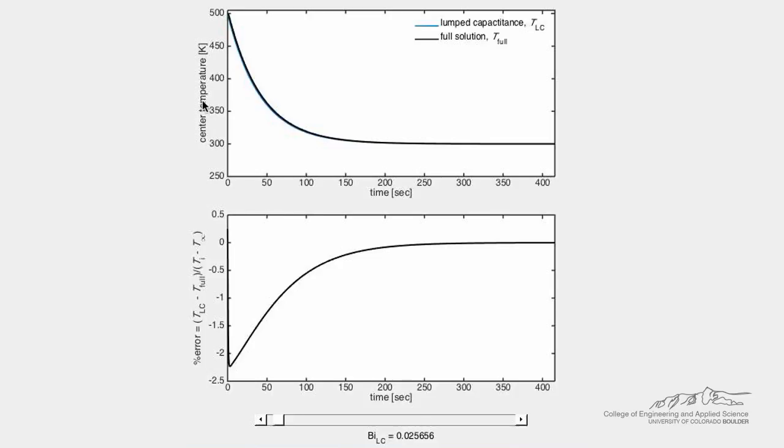The top plot shows the centerline temperature as a function of time as calculated with the lumped capacitance approach, the blue line, and calculated with the full solution to the heat diffusion equation, the black line.